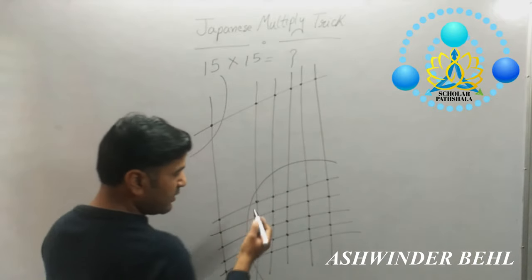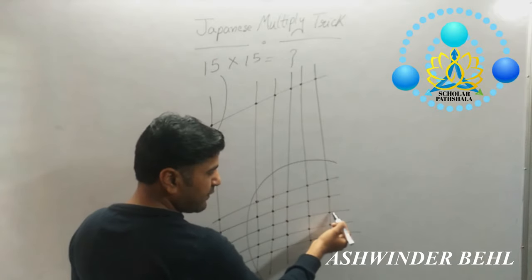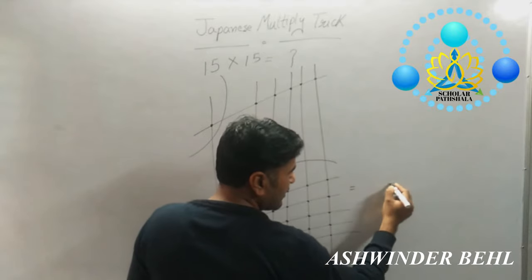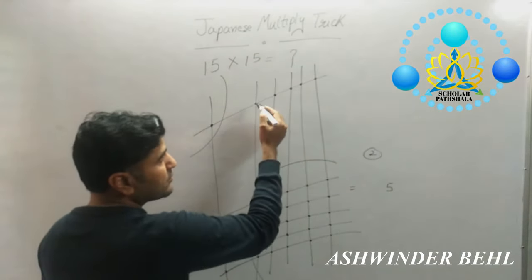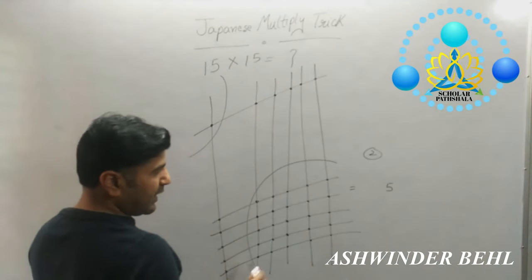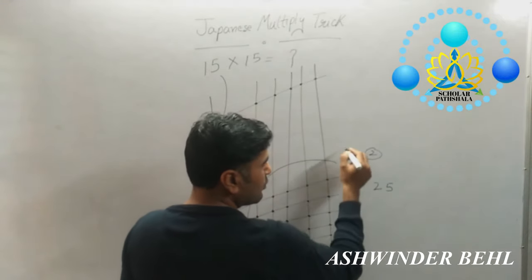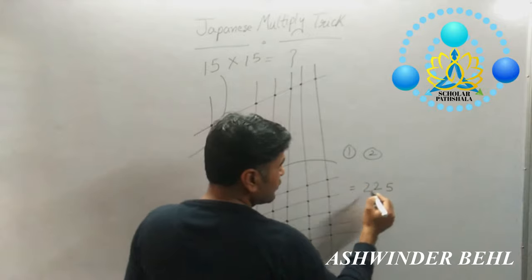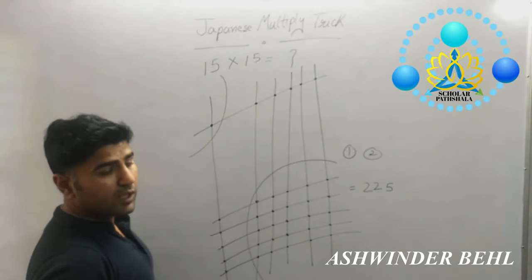Now you will count: 1, 2, 3, 4, 5. That gives 5 plus 5 is 10, plus 5 is 15, plus 5 is 20, plus 5 is 25. So you write down 5 here, carry 2. Then count the next group: 1, 2, 3, 4, 5, 6, 7, 8, 9, 10, plus 2 is 12. So write down 2, carry 1. And 1 plus 1 is 2. So the answer: 15 multiplied by 15 is 225. Now we will take one more example.